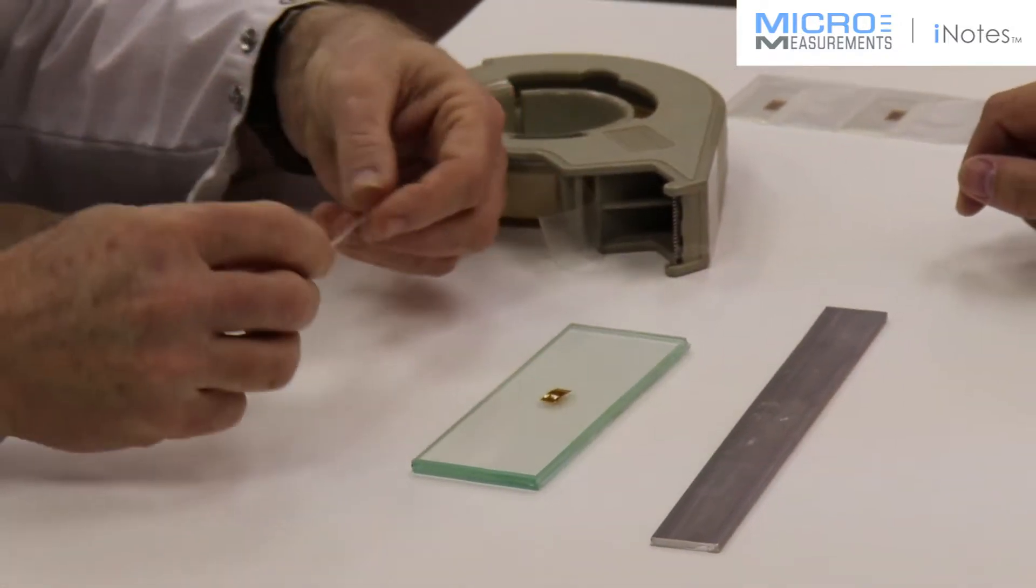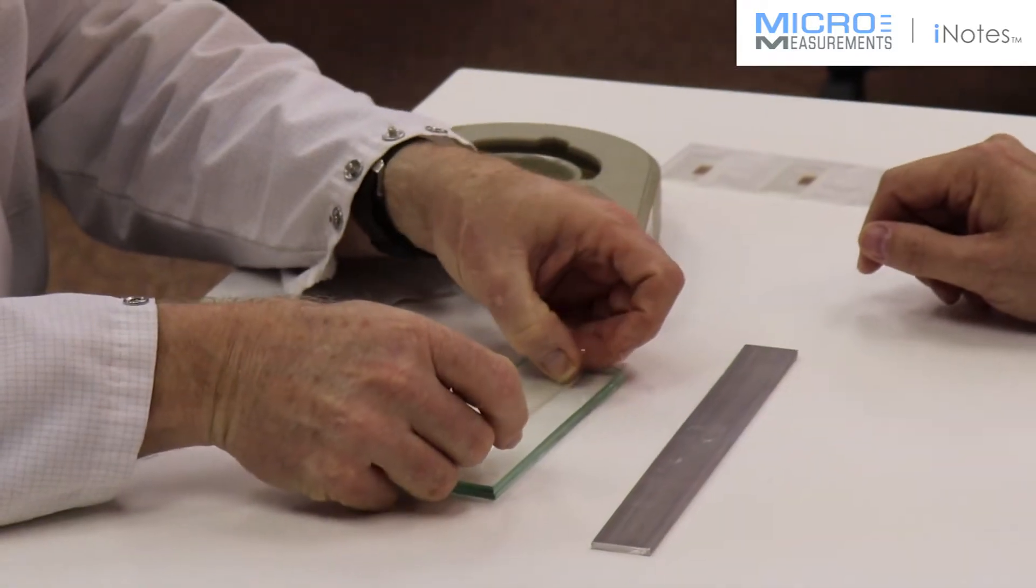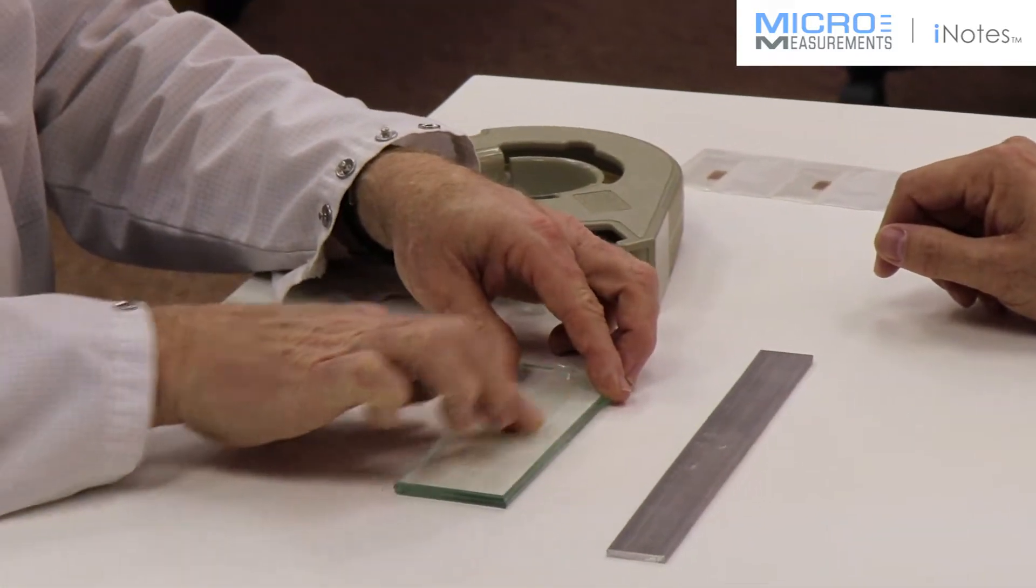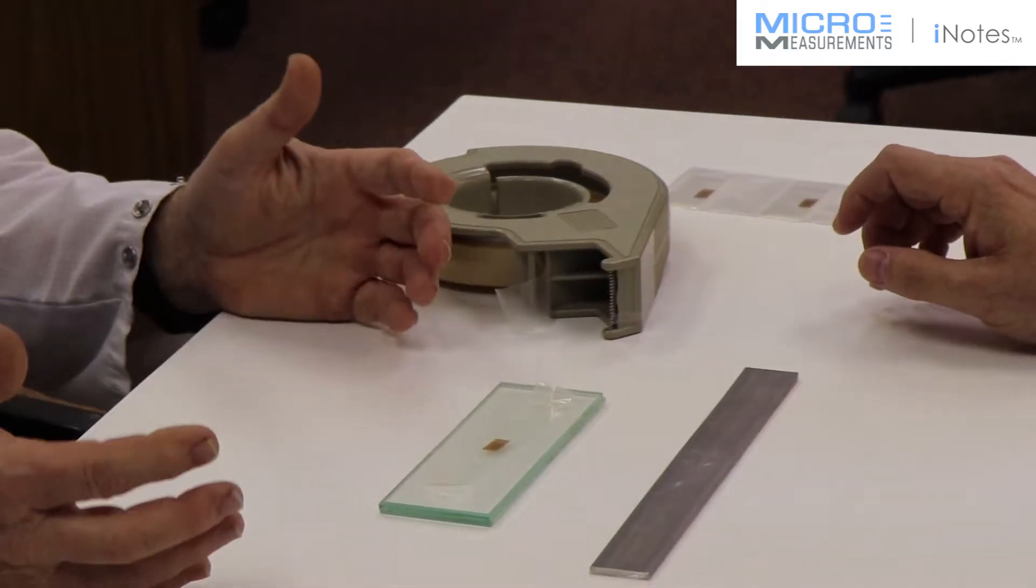And just like you did with the other tape, you press it down over the top of the gauge and the bonding of the gauge is identical.